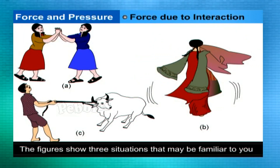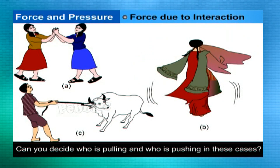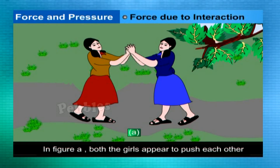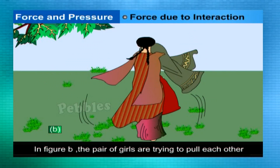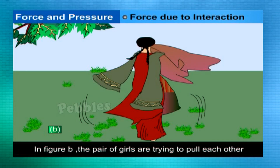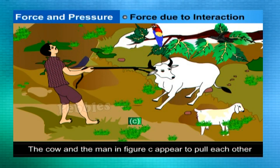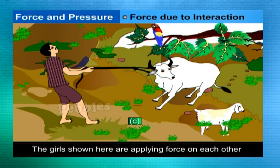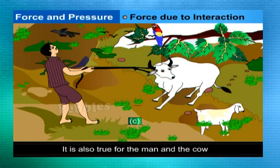The figures show three situations that may be familiar to you. Can you decide who is pulling and who is pushing in these cases? In figure A, both the girls appear to push each other. In figure B, the pair of girls are trying to pull each other. Similarly, the cow and the man in figure C appear to pull each other. The girls in the two situations shown here are applying force on each other.